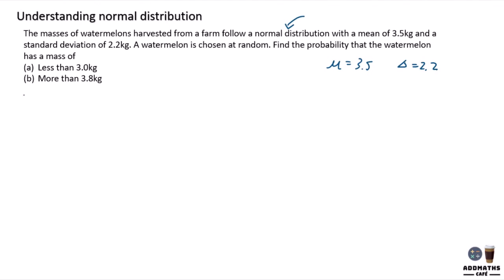For question b, you are required to find the probability, which is more than 3.8 kg. So which means that, let's say I have an x graph. 3.5 is in the middle. 3.8 will be on the right side. And you are required to find more than 3.8.